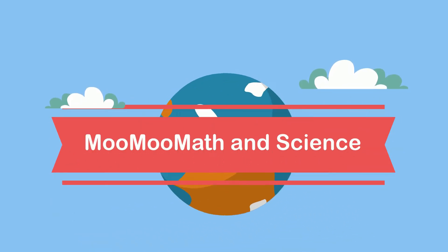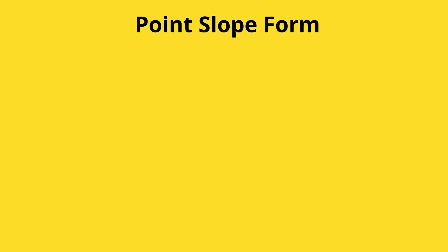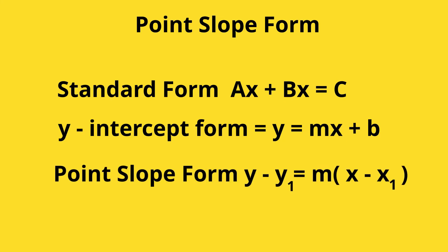Welcome to Moo Moo Math and Science. In this video, we'll look at point-slope form. You can write a linear equation one of three ways: standard form, y-intercept form, and point-slope form.